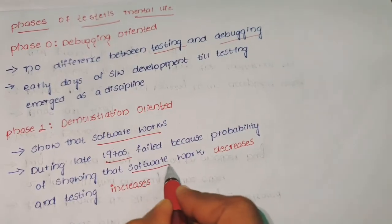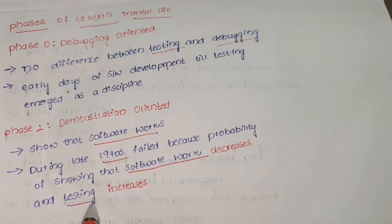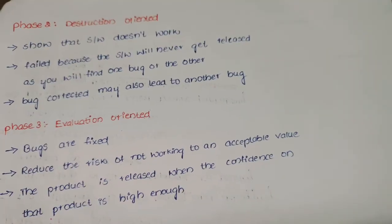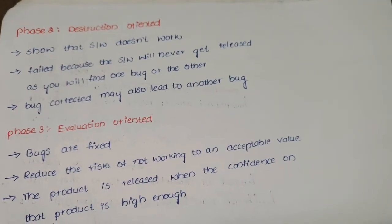Phase 2 destruction oriented shows that software does not work. The probability of showing that software work decreases and testing increases.